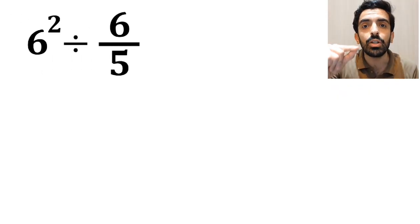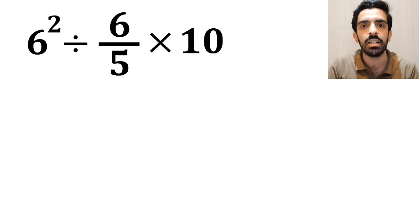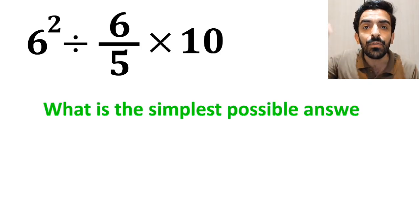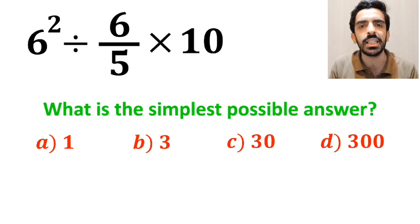If we have the expression 6 to the power of 2 divided by 6 over 5 then multiplied by 10, what is the simplest possible answer for this expression? Which option do you think is the correct answer to this question?